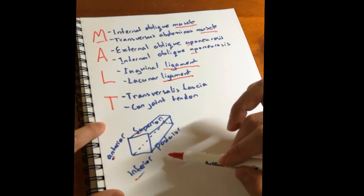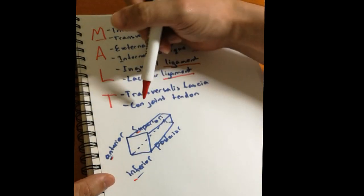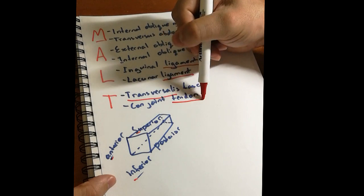And the posterior border is formed by two T's: the transversalis fascia and the conjoint tendon.